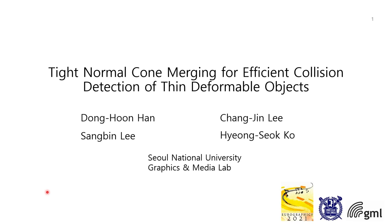This paper proposes a simple method that constructs tighter normal cones than previous methods. With this tighter normal cone, we can obtain more efficient culling performance in collision detection.